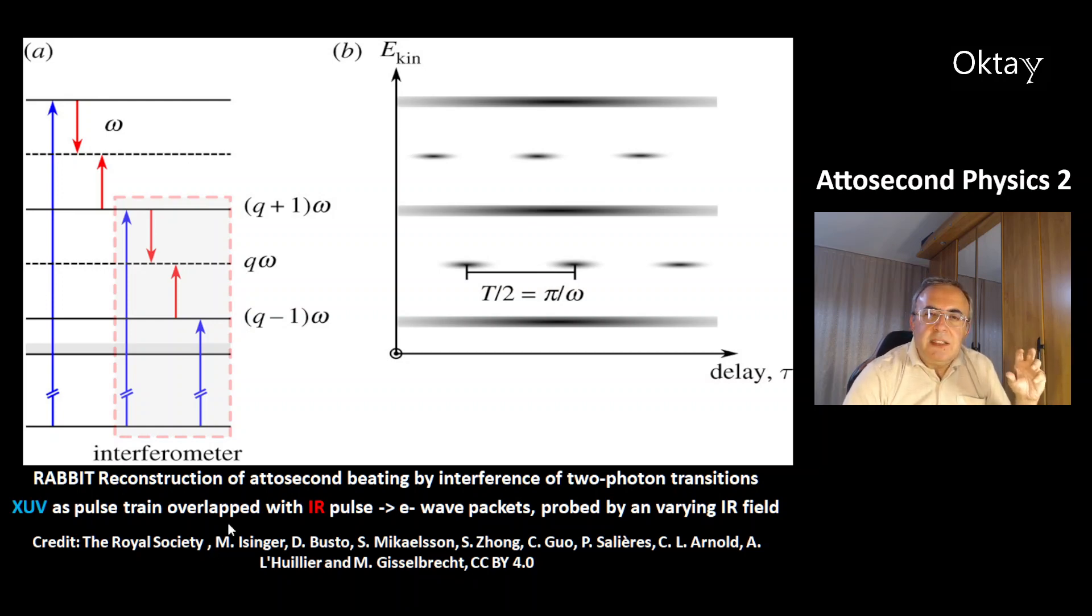Then it is pulsed with infrared photons, so it emits infrared photons. And then it gets to this level. So you are creating electron wave packets, and they are probed by a varying infrared field. That's how you measure this.